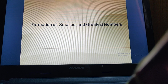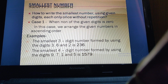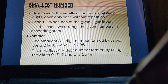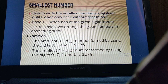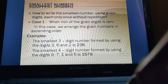Good morning class. Today we will learn about formation of smallest and greatest numbers. First, we will learn how to write the smallest number using digits without repeating the digits. The first case is when the given digits do not include zero. We just have to arrange the digits in ascending order, meaning from the smallest to the greatest.